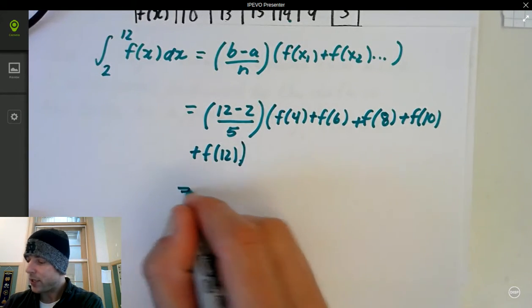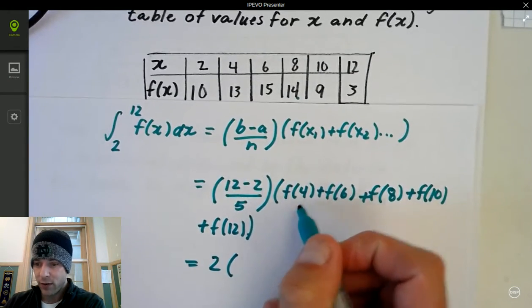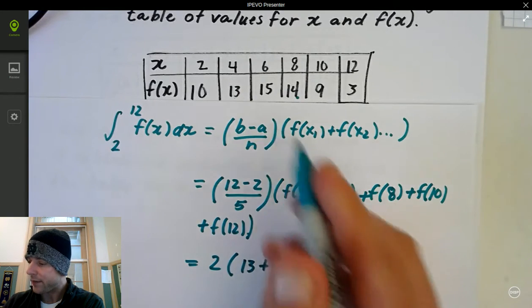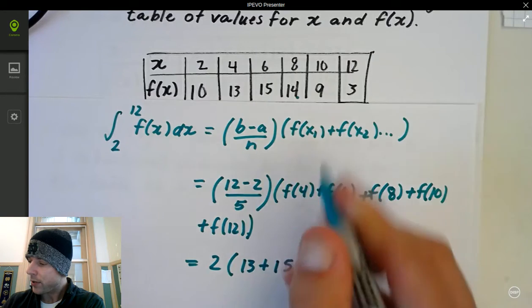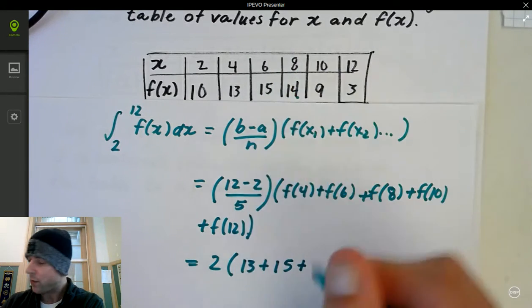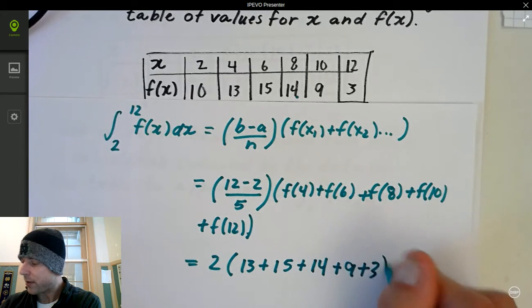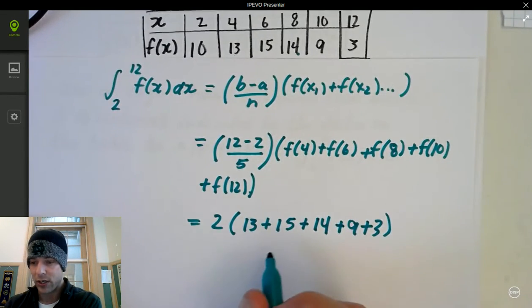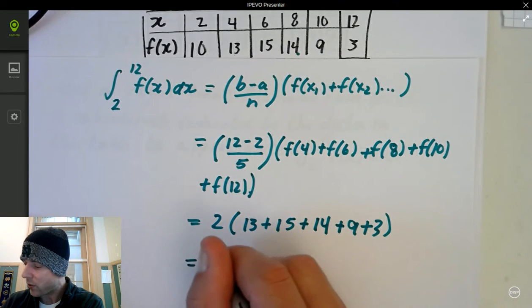Now, we know the width of each rectangle is 2, so that's on the outside. f(4) is 13, so we get 13 plus f(6) is 15 plus f(8) is 14 plus 9 plus 3, right? The f(10) and f(12), respectively. So now I've got all these values. I sum them up, and I multiply by 2, and I think you get 108 there.